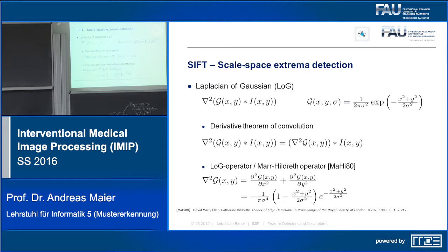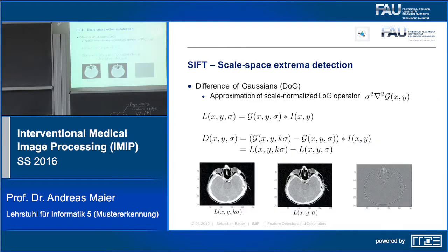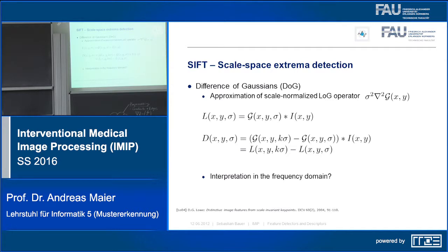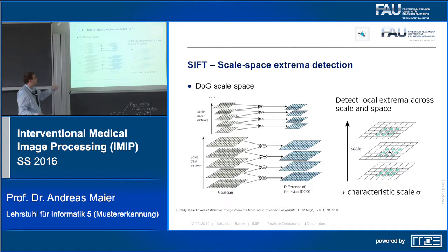The Difference of Gaussians approximates the Mexican hat and gives a visually very similar result. You detect extrema in the scale space to determine both the location and scale of interest points.